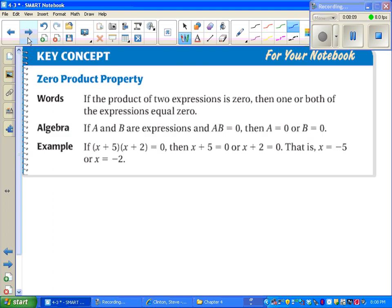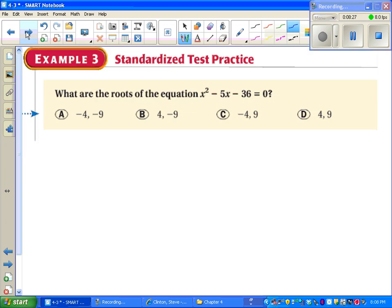Zero product property. It says if two things are multiplied together and equal zero, then one of them must be zero. That always has to happen. You can't multiply two numbers together and get zero unless at least one of them is zero. Maybe they're both zero, but definitely one of them.